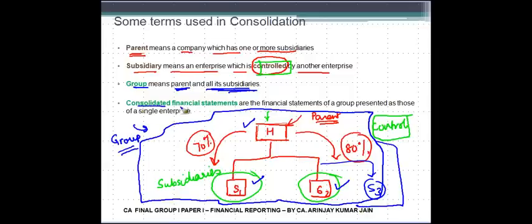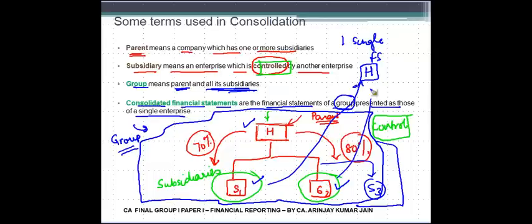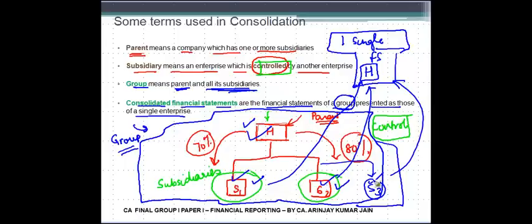Consolidated financial statements are the financial statements of a group presented as those of a single enterprise. What does this mean? This means that if I were to prepare one single set of financial statements of H, the parent company, where I merge the accounts of S1, S2, S3 and so on, these accounts are known as consolidated financial statements. These are prepared as if this entire group including H, S1, S2, S3 is a single enterprise.